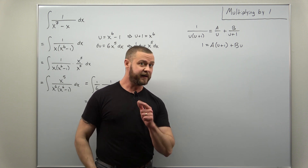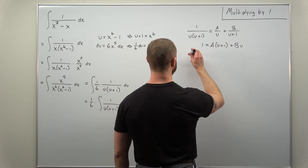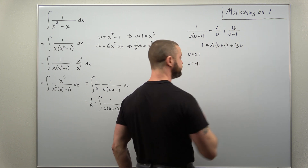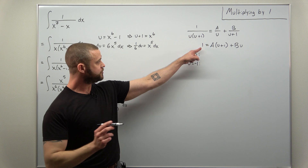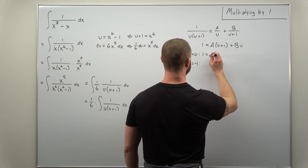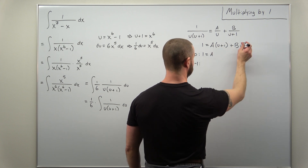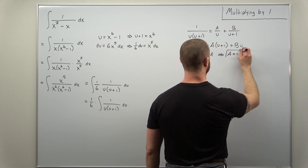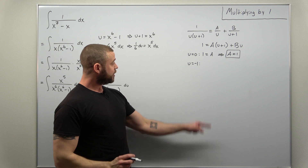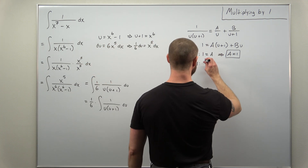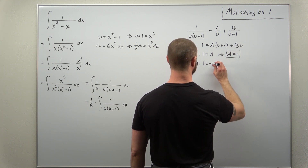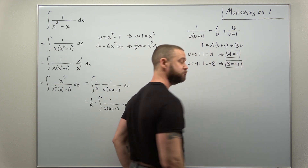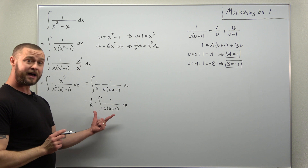When you have only linear factors it's very easy to solve for your constants A and B by plugging in values for u. We're going to plug in u equals zero and u equals negative one. Plugging in u equals zero: the left side stays one, the B term drops out, and A comes out to be one. Plugging in u equals negative one: the A term drops out, we get one equals negative B, so B is negative one.